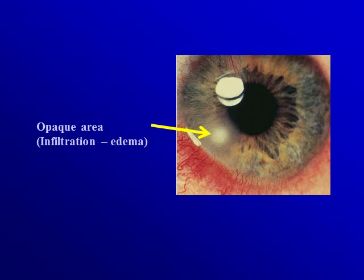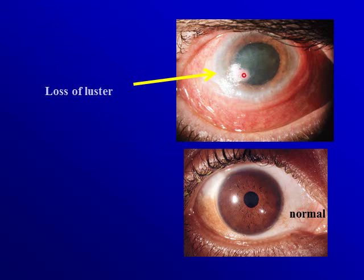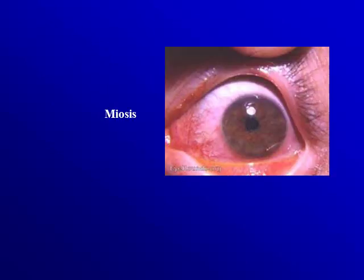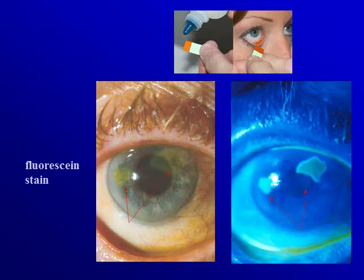Another sign is opacity, where you get infiltration and edema in the affected part. Then there is loss of lustre — normally there is lustre on the surface of the cornea due to reflection of light at the interface between the tear film and the epithelium. If the tear film or epithelium is absent, there will be loss of lustre. The pupil is miotic. Fluorescein stain can be used to delineate the amount of epithelial loss.